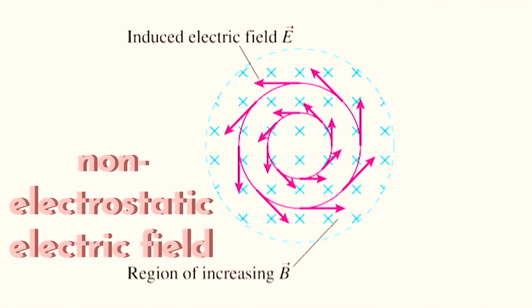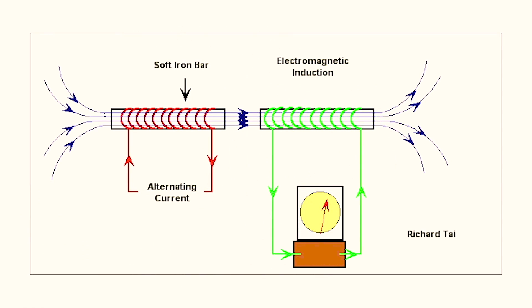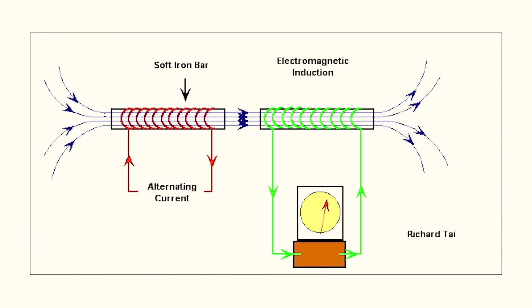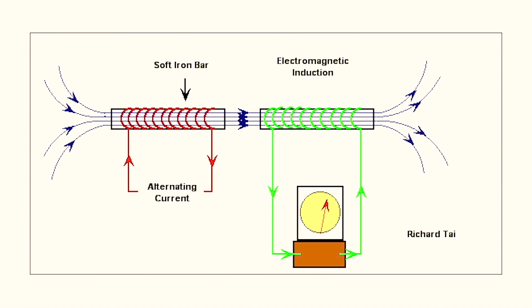This next part is really important. Induction creates what's known as a non-electrostatic electric field — in other words, an electric field born out of a changing magnetic field. This electric field will develop perpendicularly to the magnetic field.